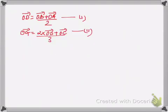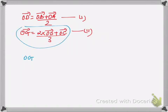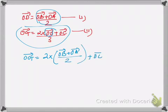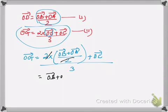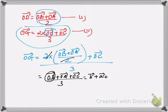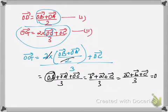Now using our two equations, I'll substitute equation 1 into equation 2. So OG equals 2 times (vector OB plus vector OA divided by 2) plus vector OC, all divided by 3. We can cancel the 2 in the numerator with the 2 in the denominator, giving us vector OB plus vector OA plus vector OC divided by 3. Since OA equals vector A, OB equals vector B, and OC equals vector C, we get vector A plus vector B plus vector C divided by 3.